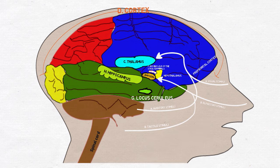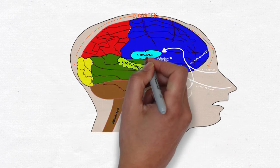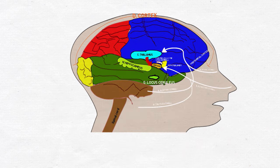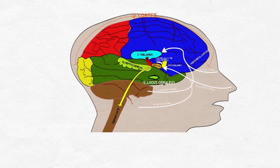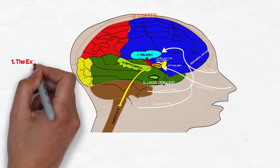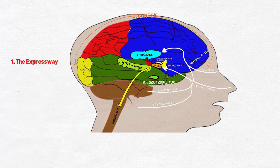Any cues from your incoming senses that are associated with a threat in the amygdala, whether that threat is real or not, current or not, are immediately processed to trigger the fear response. This is the expressway. It happens before you consciously feel the fear.